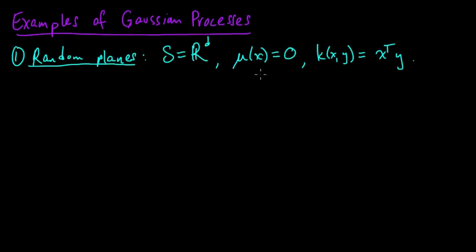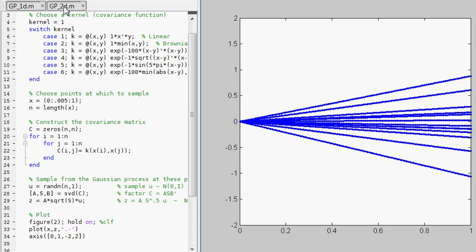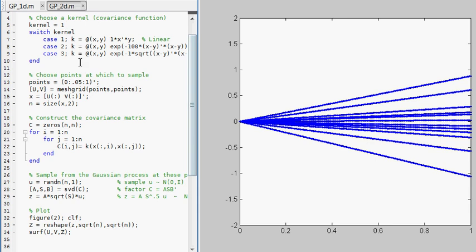Pretty much all the mean functions we're going to use are going to be mean 0. And let me also show you, so since I defined for random planes, I have this other script, which draws samples from two-dimensional Gaussian processes, which are sometimes called Gaussian random fields. And you can study this one also if you so choose.